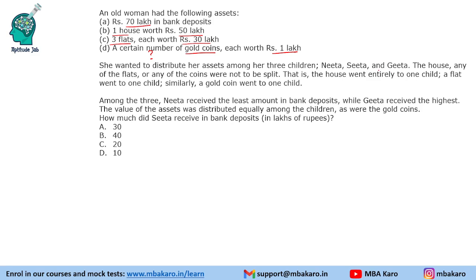The house, any of the flats, or any of the coins were not to be split. That is, the house went entirely to one child, a flat went to one child, and similarly a gold coin went to one child. Among the three, Nita received the least amount in bank deposits, while Geeta received the highest.